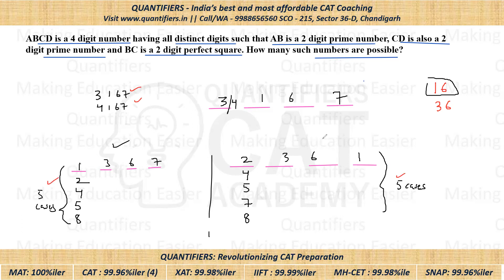So the total count: 2 cases from BC=16, plus 5 cases from BC=36 with CD=61, plus 5 cases from BC=36 with CD=67. Total = 12 such numbers are possible. The concept here wasn't difficult — the important part was how to count all cases systematically. If you liked the video, please like, share, and subscribe to the channel.